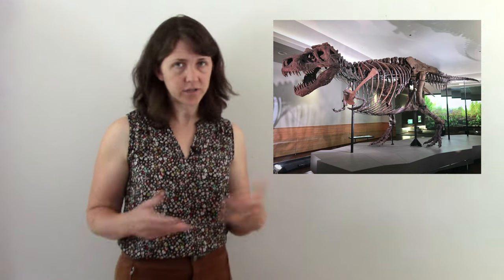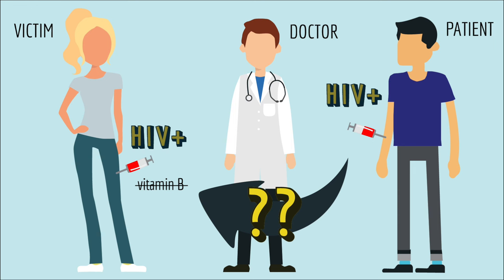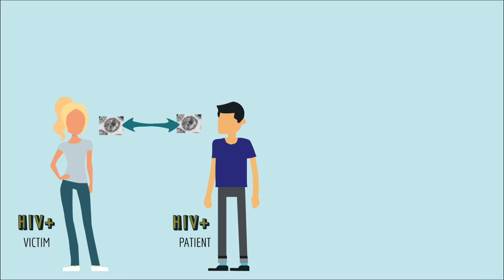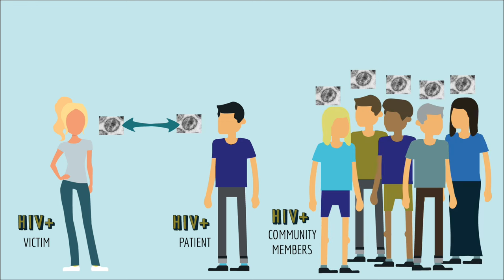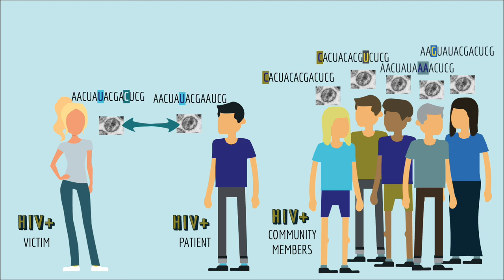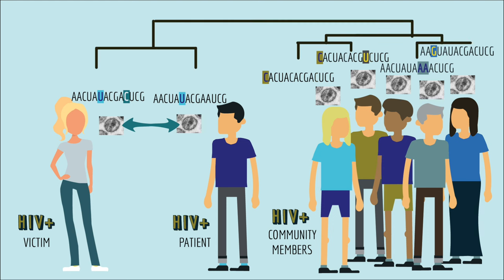By the way, sometimes scientists want to construct an evolutionary tree for organisms that we don't have DNA sequences for. In that case, scientists use differences in body shape instead of DNA sequences in order to determine relatedness. So if the doctor infected the victim with HIV from the patient, then her HIV viruses would be more closely related to the patient's viruses than to the viruses of anyone else in the community. To test that, the scientists determined the sequence of viruses from the victim, the patient, and several HIV-positive people from the community, and they determined the evolutionary relationship between all those viruses.